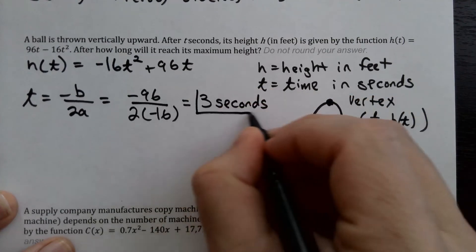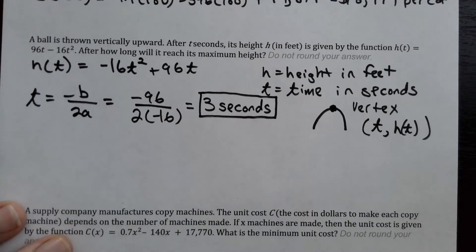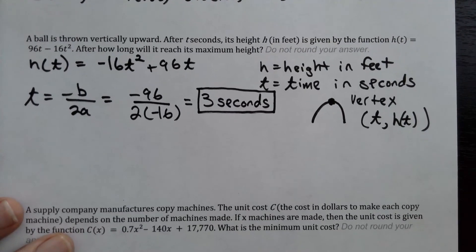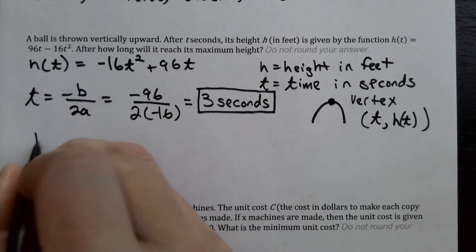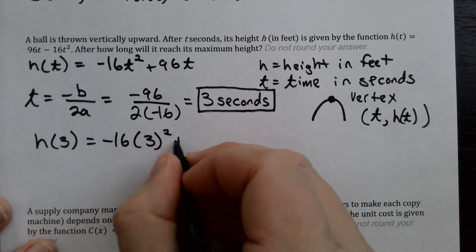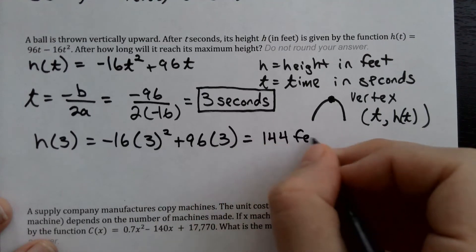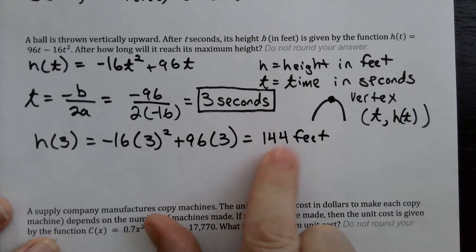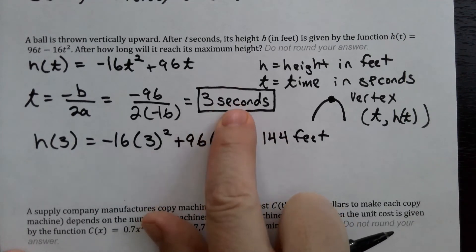It takes 3 seconds for the ball to reach its maximum height. If they also ask what the maximum height is, we plug T equals 3 back in: h of 3 equals negative 16 times 3 squared plus 96 times 3, which gives 144 feet. But since the question asked how long, the answer is 3 seconds.